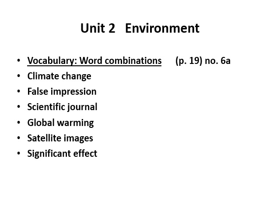We come to another item called word combinations, which has the same meaning as collocations. Examples include: 'climate change' — two nouns matching together; 'false impression' — adjective and noun; 'scientific journal' — adjective and noun; 'global warming' — adjective and noun; 'satellite images' — two nouns; and 'significant effect' — adjective and noun, meaning a very important effect.